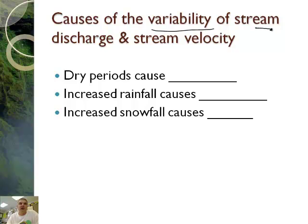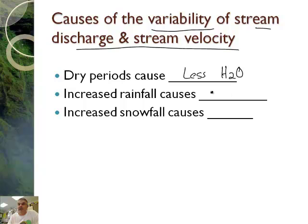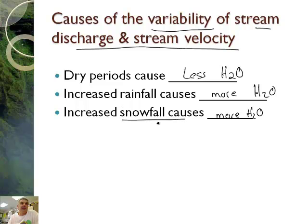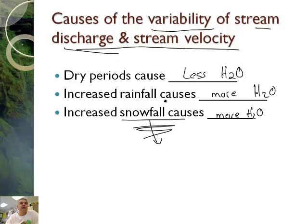What are the causes of variability of the stream? What's going to cause the stream to have different stream discharge? Dry periods cause less water. Increased rainfall causes more water, and increased snowfall causes more as well. So if you have a really snowy winter and then you get snowmelt in the spring, the biggest discharges happen during the spring runoffs - typically here in Colorado, because that's where all the snow gets stored for the winter and then gets discharged.